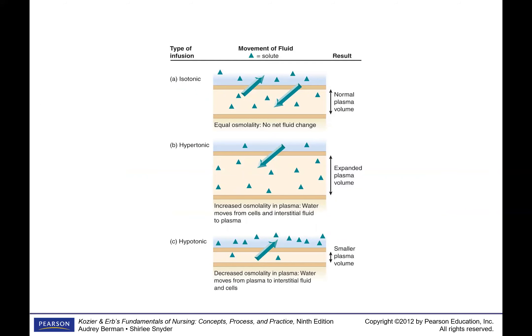If I administer an isotonic solution, the osmolality equals that of the plasma, so there isn't really any net change in concentration. When I give a hypertonic solution, it increases the osmolality in the plasma — water moves from the cells and interstitial fluid into the plasma, expanding plasma volume and shrinking the cells. A hypotonic solution does the exact opposite: it decreases plasma concentration, so water moves from the plasma into the interstitial spaces and cells — plasma volume decreases and cells expand.